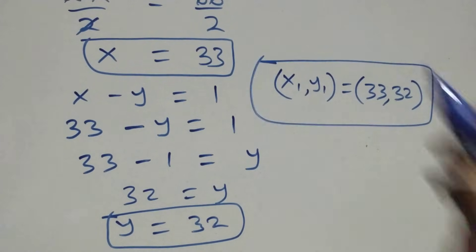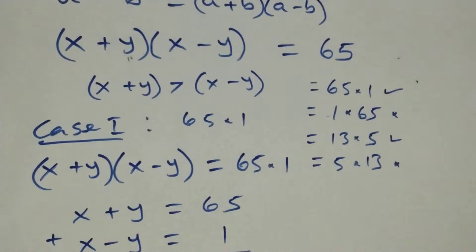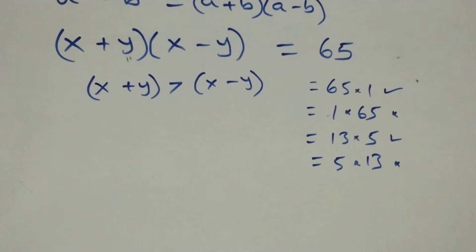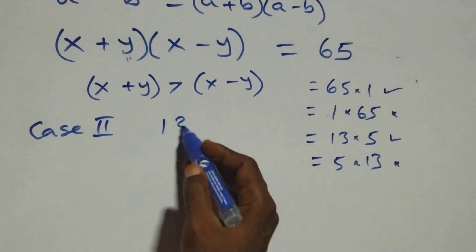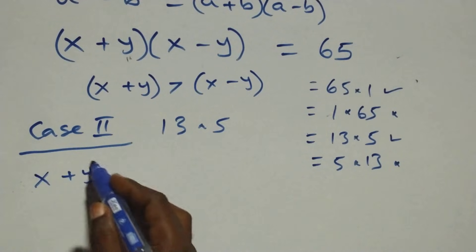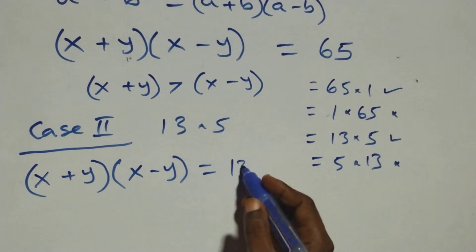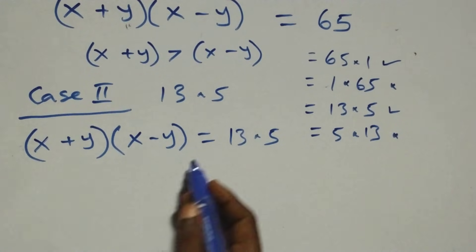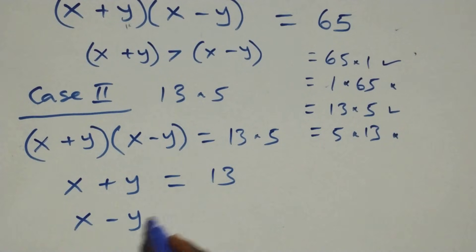The first set of solutions is x₁, y₁ equals (33, 32). Now let's consider Case 2: 13 times 5. The equation (x+y)(x-y) equals 13 times 5, which gives x plus y equals 13 and x minus y equals 5.